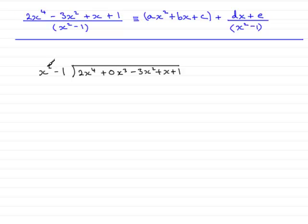So what we need to say is what do we multiply x squared by to get 2x to the power 4 and that would be 2x squared. So I'd write that over there and now I multiply 2x squared with the x squared minus 1 and that would give me 2x to the power 4.